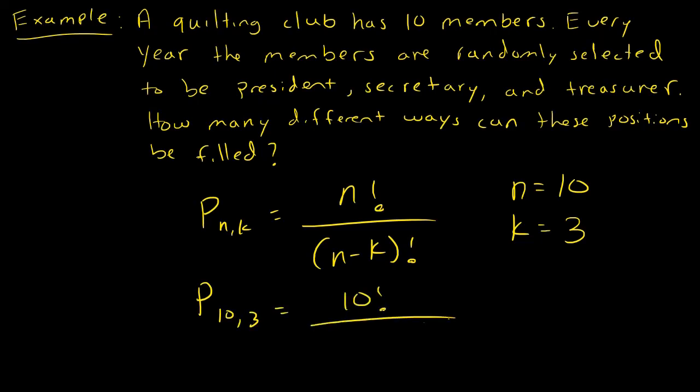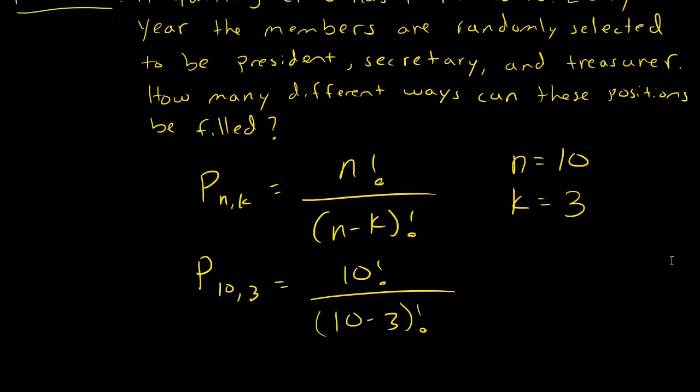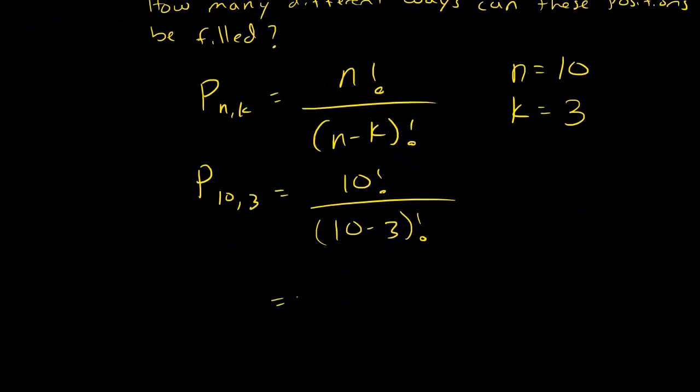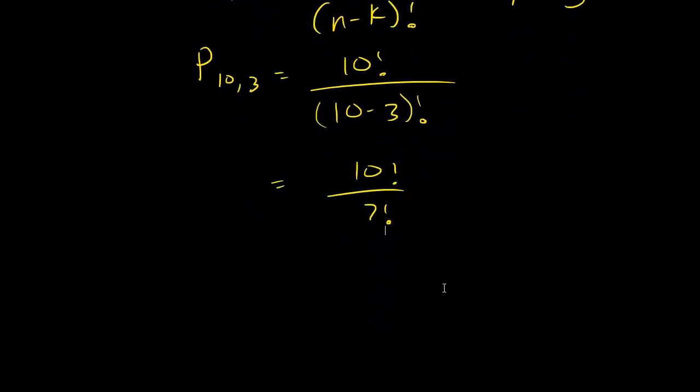So then how do we solve this? We have 10 factorial divided by 7 factorial. So 10 times 9 times 8 times 7. Now I could write times 6 times 5, etc. Or I could just stop and say, okay, well, basically 7 factorial is going to be back here.